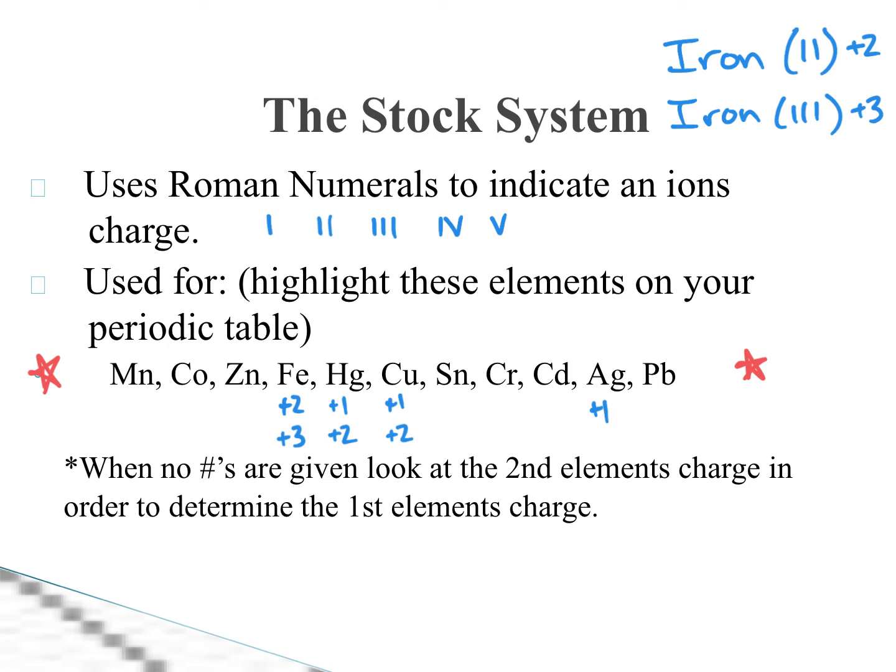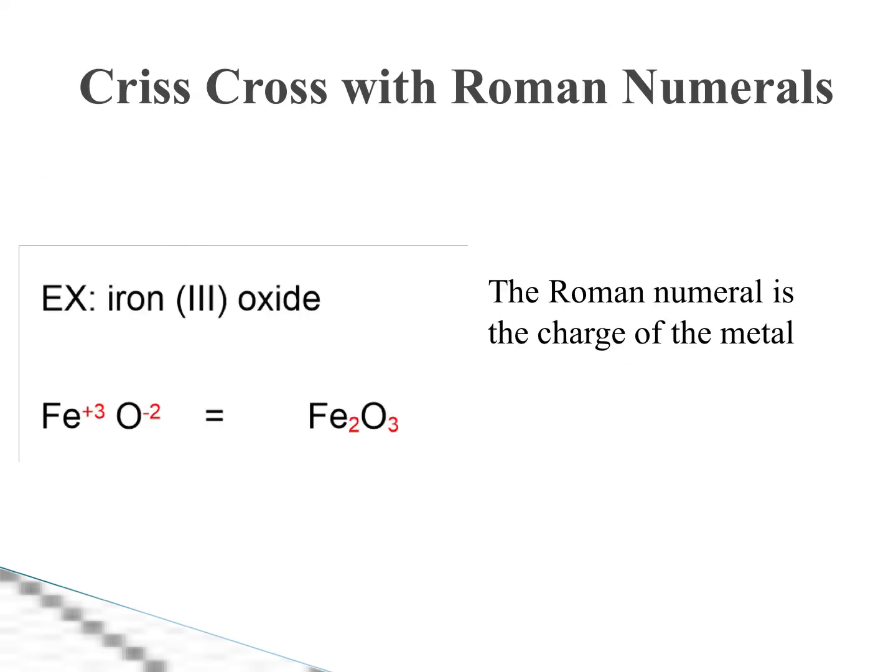So this stock system is an older way of figuring out this charge. You look at these right here, and I want you to use the Roman numerals if it's one of these. How do we do crisscross with the Roman numerals? The good news is the crisscross method is done the same way. For example, if we look at iron three oxide, we could go ahead and do crisscross just like we've been doing it. So iron three has a positive three charge. Oxide, which is oxygen, has a negative two charge. So this three goes down there. This two goes down there. And what do you know? We end up with Fe2O3. The Roman numerals is the charge of the metal. That's it for the stock system.